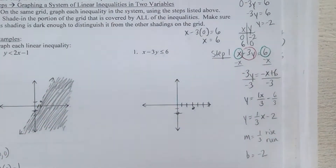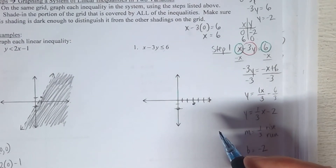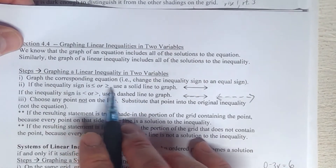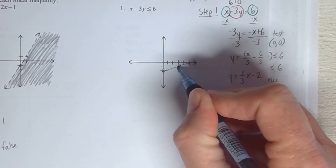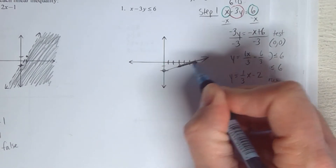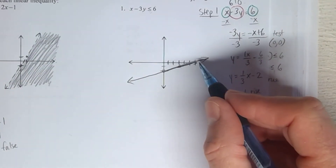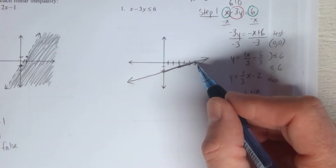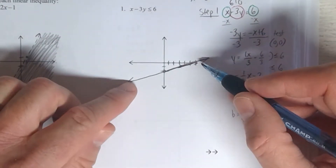Now we're ready to draw the line — that's step one. If you use the m and b method, start at negative 2 on the y-axis, then rise and run because the slope is positive: go up 1 and over 3. Now draw a nice solid line — the alligator's got feet, so solid. Make it go all the way from one end of the grid to the other, put your arrows on it.